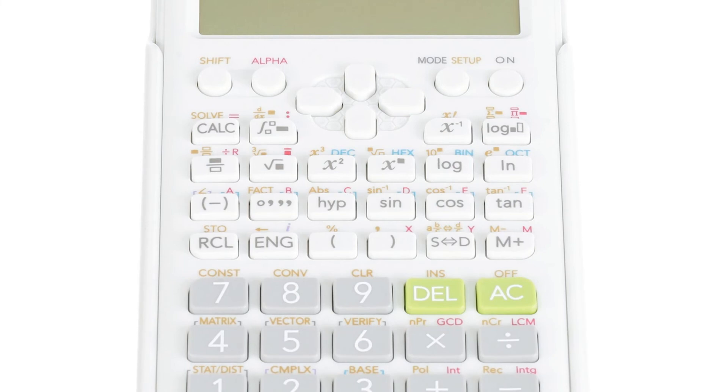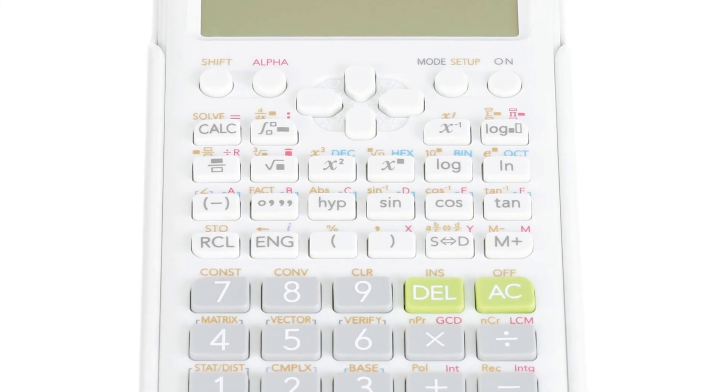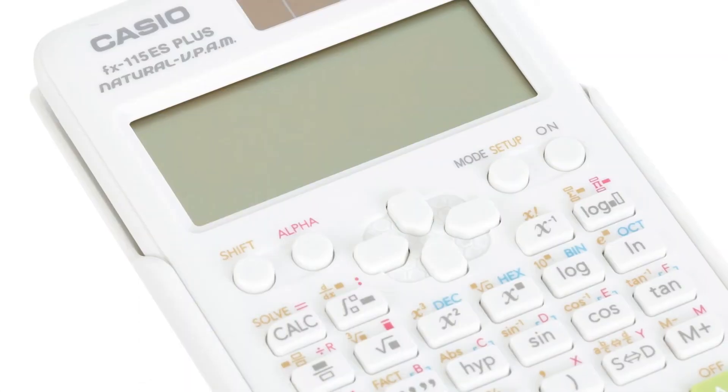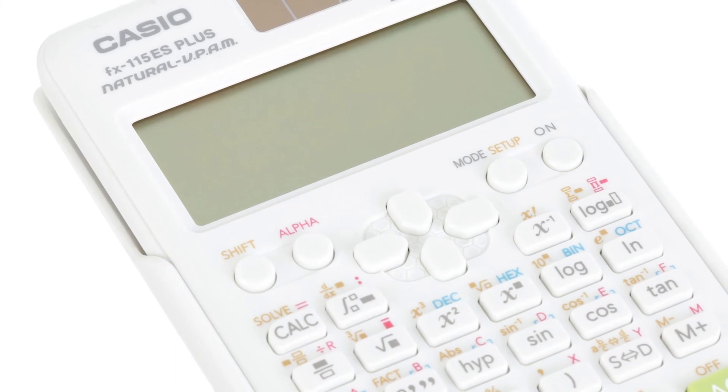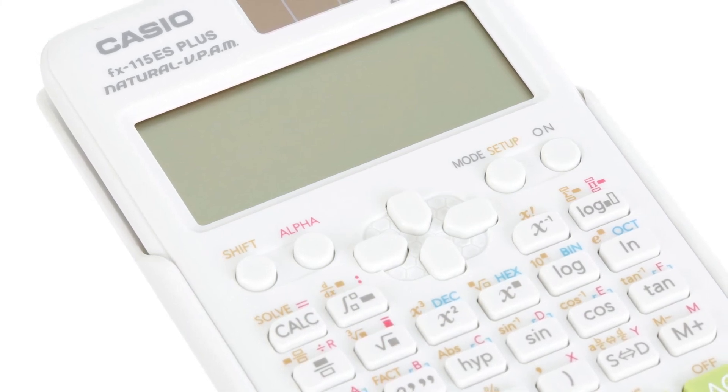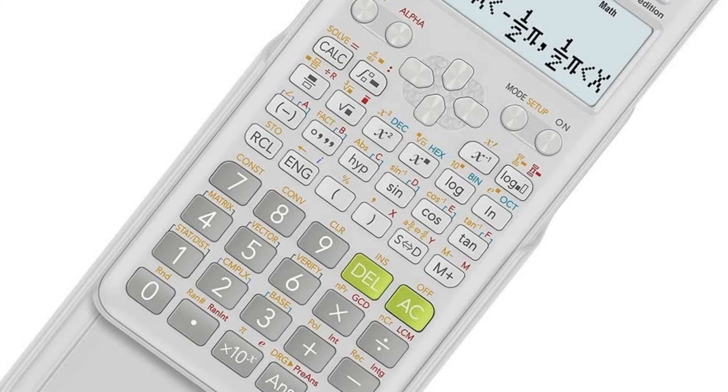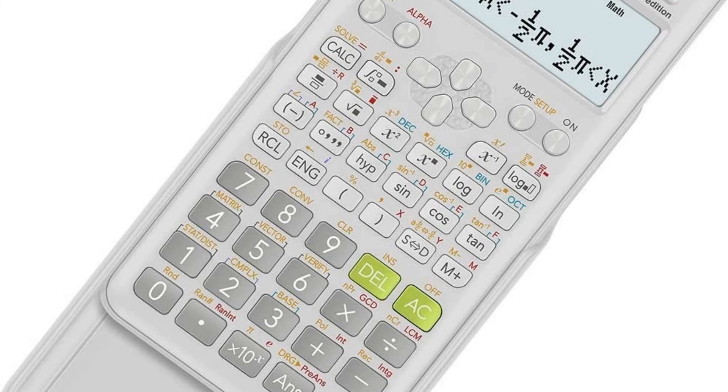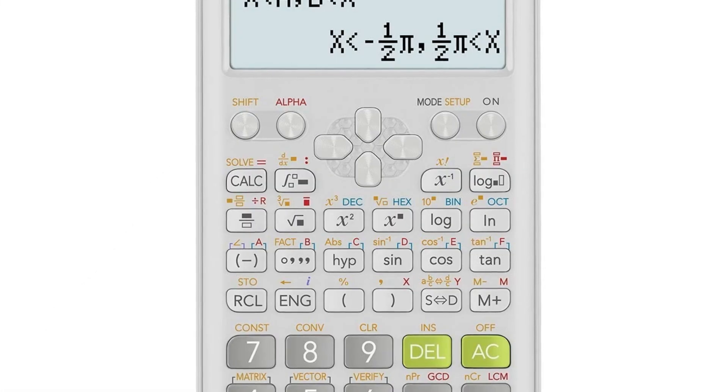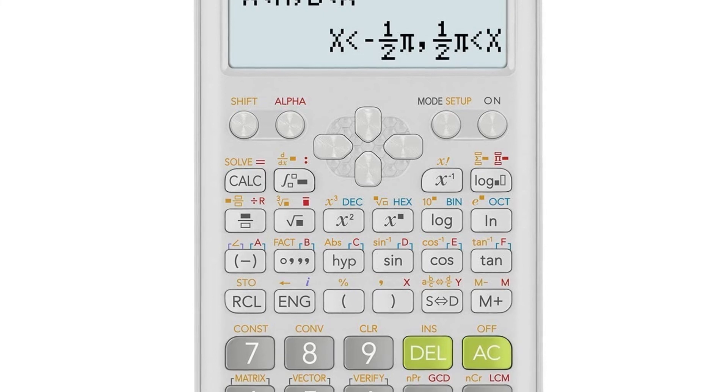Number five: Casio FX-115ES Plus 2nd Edition Advanced Scientific Calculator. Casio's advanced scientific calculator features new natural textbook display and improved math functionality. FX-115ES Plus has been designed to be the perfect choice for high school and college students learning general math, trigonometry, statistics, algebra I and II, calculus, engineering, and physics.